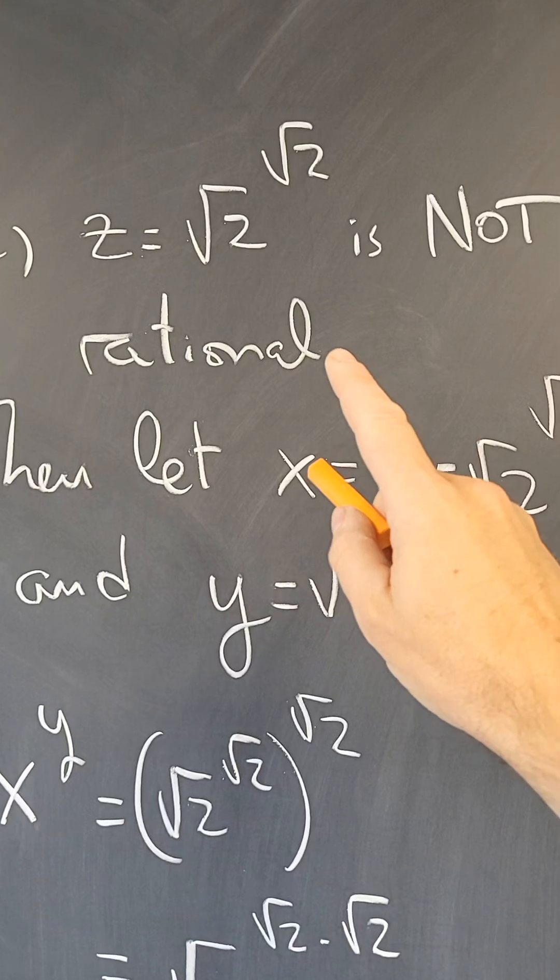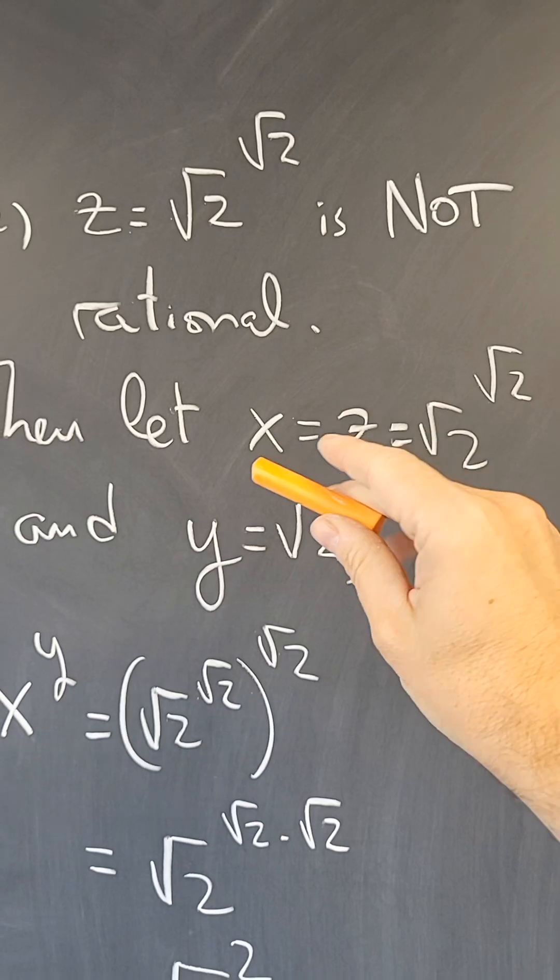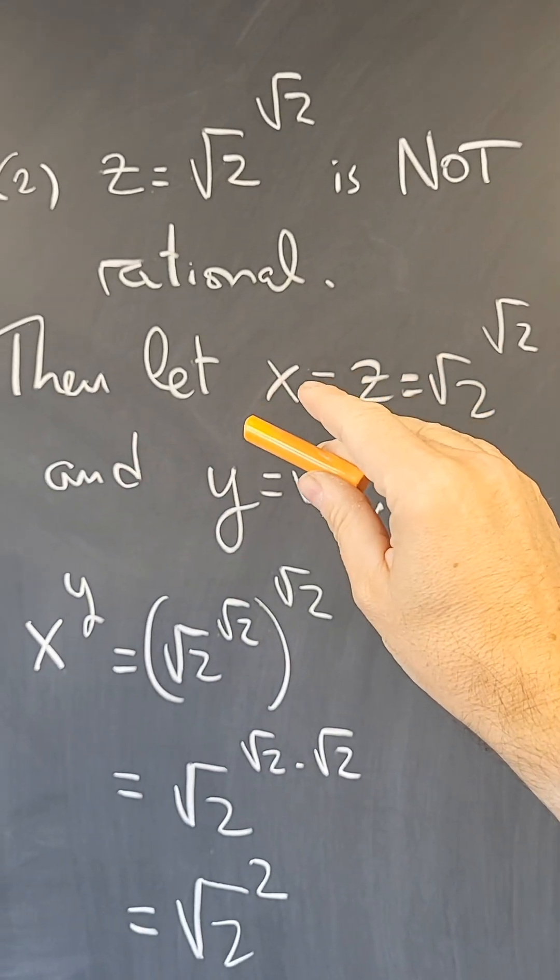The truth is that, in fact, a square root of 2 to the square root of 2 is not a rational number. But that is actually tricky to prove. Now,